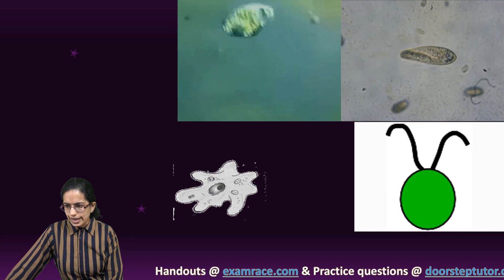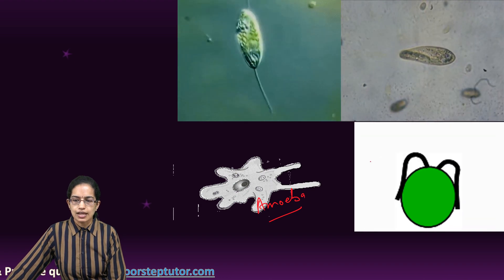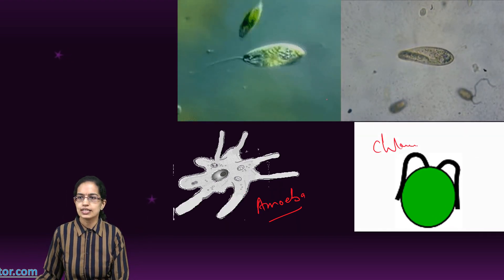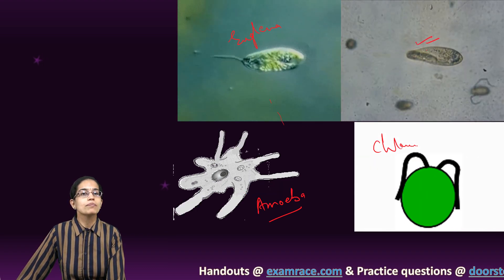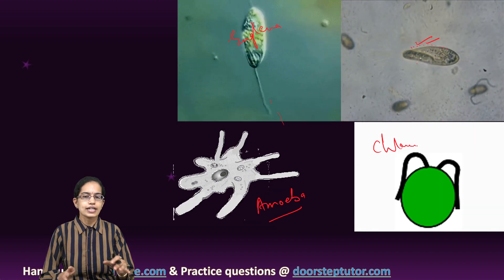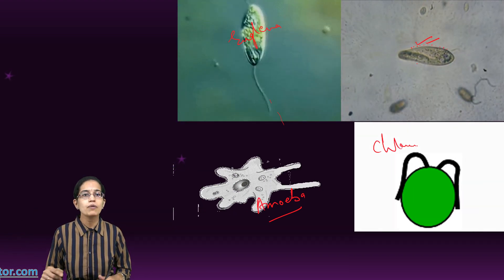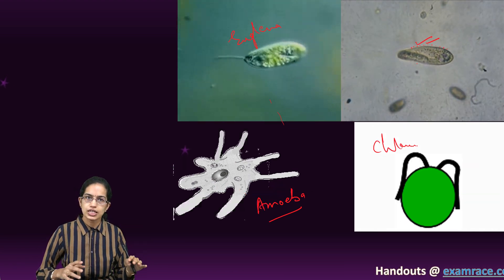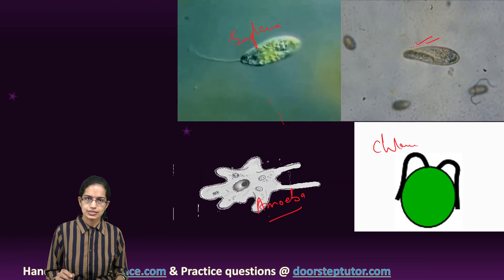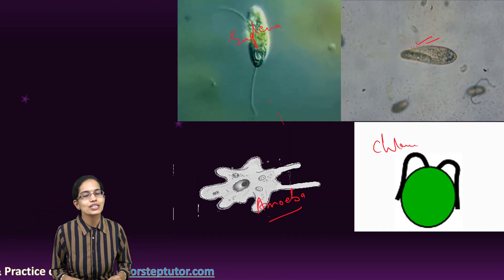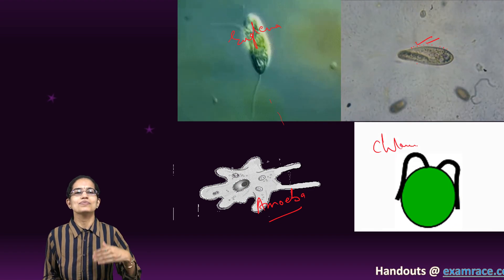As seen in the diagrams: amoeba shows movement of pseudopodia; chlamydomonas has two flagella; euglena shows movement through the flagella; and paramecium shows small cilia on the body that help in movement. To recap: euglena has one flagellum, chlamydomonas has two flagella, paramecium has cilia and two nuclei, chlamydomonas has a cup-shaped chloroplast, and amoeba has pseudopodia. We will be talking about multicellular organisms in our coming classes.